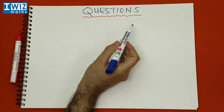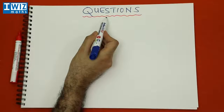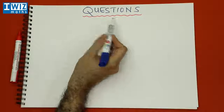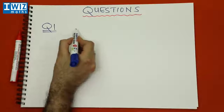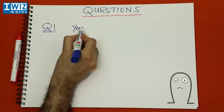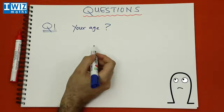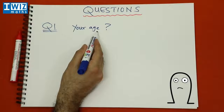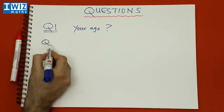The best way to get a handle on any new topic is to go through a bunch of questions yourself, so we'll give you a few questions to deal with on prime numbers. Question number one: is your age a prime number or not? You know what your age is, and the question you need to ask and answer is whether your age is a prime number or not.